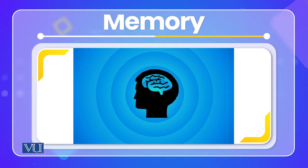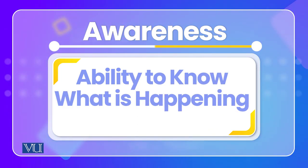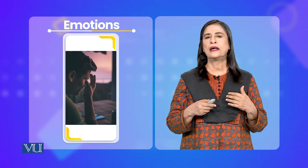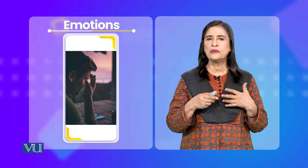پھر memory ہے — جو کچھ دماغ میں store ہوا ہے، پچھلے واقعات، جن کی awareness ہم بار بار consciousness میں واپس لاتے ہیں، چاہے وہ کل کی بات ہو یا پچیس سال پہلے کی۔ پھر awareness — ہماری ability کہ ارگت میں کیا ہو رہا ہے۔ پھر sense of identity — میں کون ہوں — جو ہماری consciousness میں ہر وقت رہتی ہے، اسے self-consciousness یا self-awareness بھی کہتے ہیں۔ اور emotions — خوف، excitement، اداسی، disgust، حیرانی۔